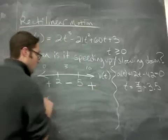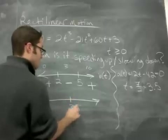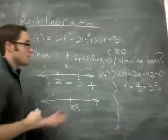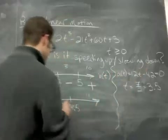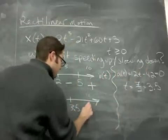So what does its number line look like? Well, here's 3.5. I just got to check something small and something big, so maybe 0 and 10. If I plug in 0, I'm going to get a negative, and if I plug in 10, I'm going to get a positive.